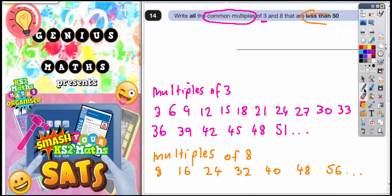OK. So now we've got our multiples of 3 and multiples of 8. We want common multiples that are less than 50. Now common multiples are basically numbers which are in both lists. OK. Because common means it's got to be in both lists. So all we've got to do now is check for numbers that are in both lists.